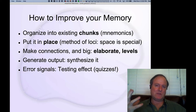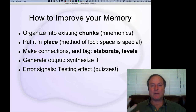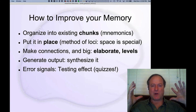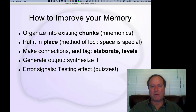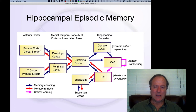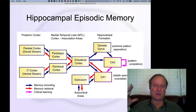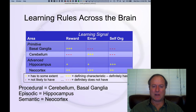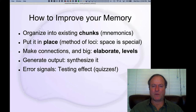Turning things you need to remember into chunks — especially chunks involving spatial locations — is very powerful. These are examples of elaborative encoding. The bigger the representation, the more different aspects of your brain activated by a given memory, the stronger that memory encoding will be. The hippocampus collects information from all over the brain, so a rich, highly differentiated pattern of activity in the entorhinal cortex gives you more routes to access that memory later.